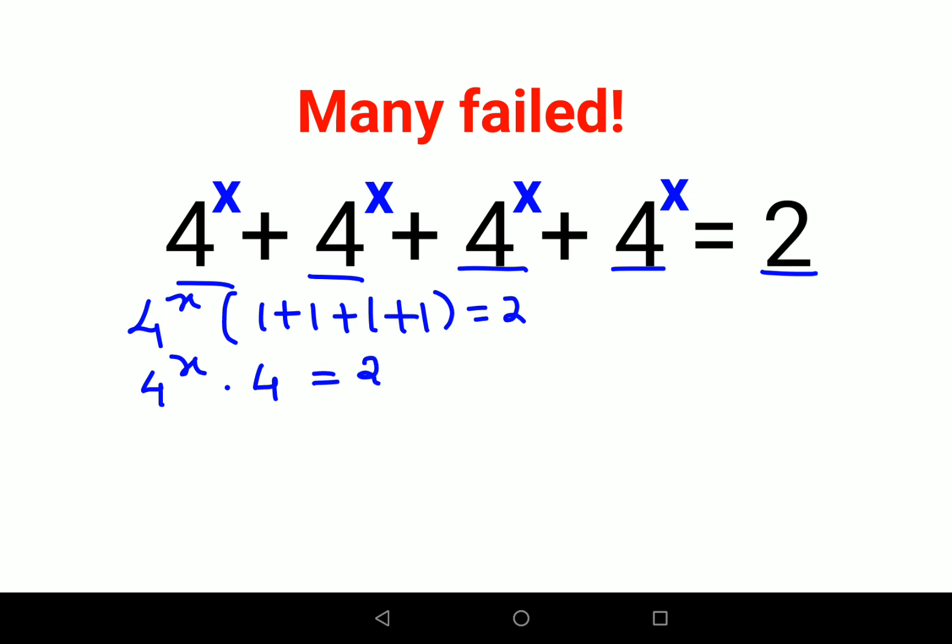In order to find the value of x, we will divide both sides by 4. So this cancels out and I am left with 4 raised to x equals to 1 upon 2.